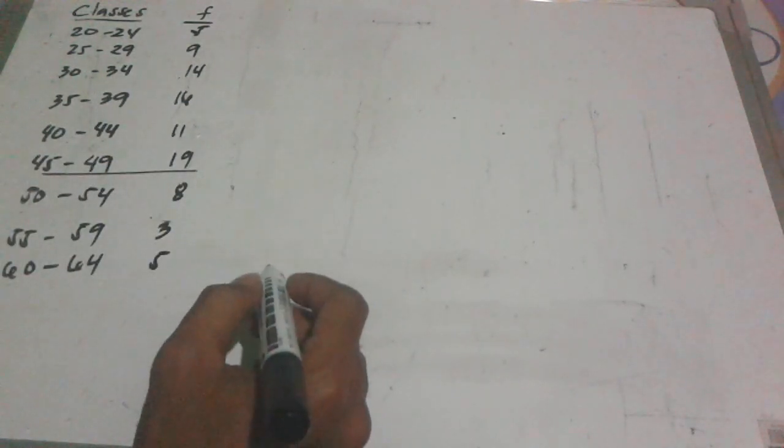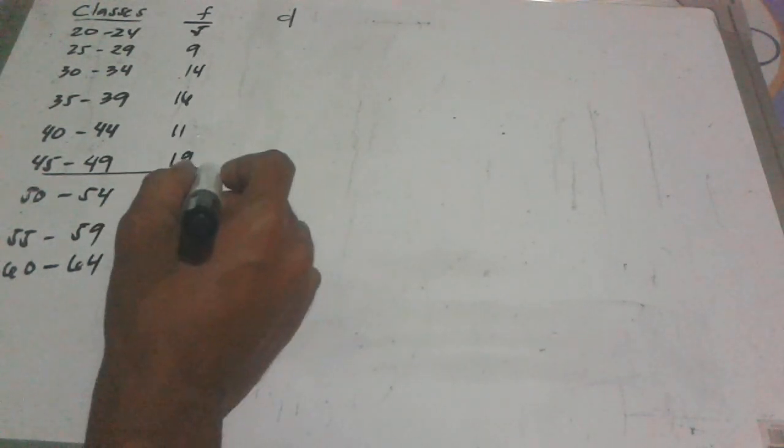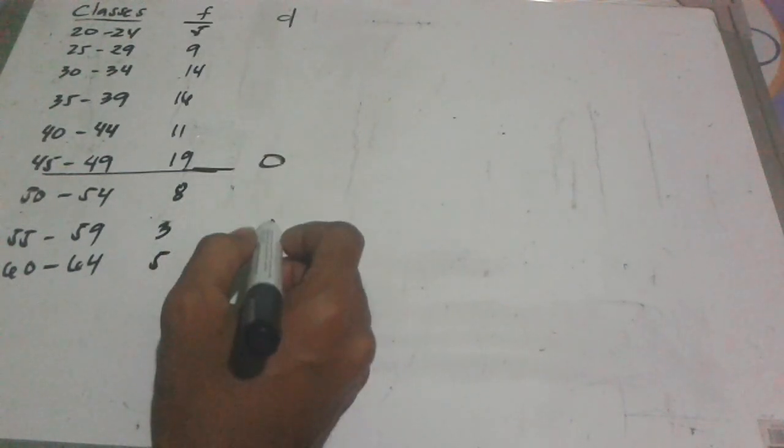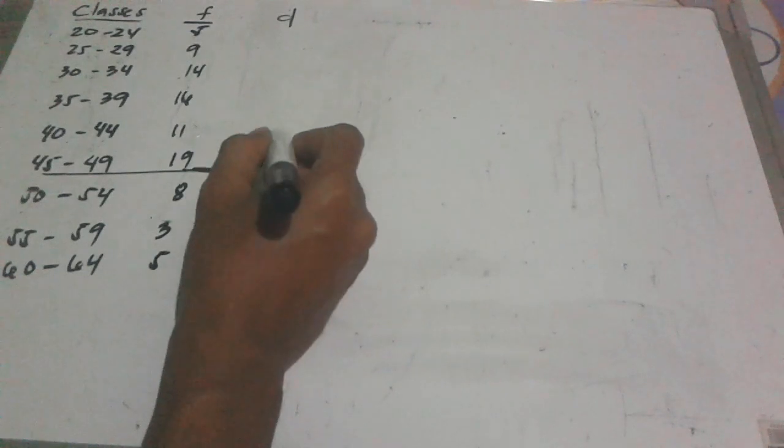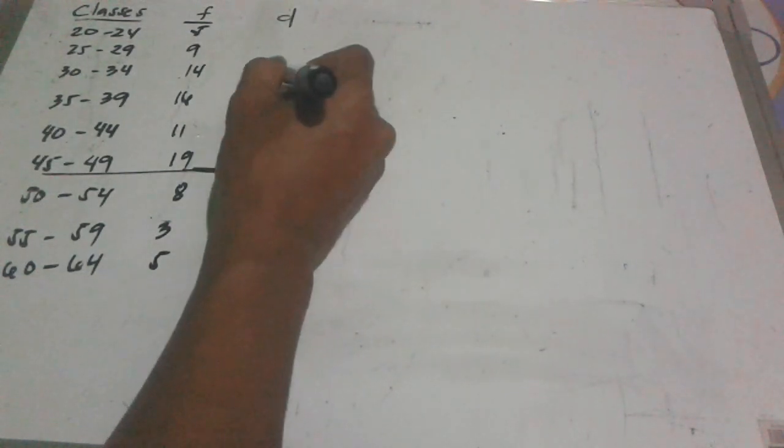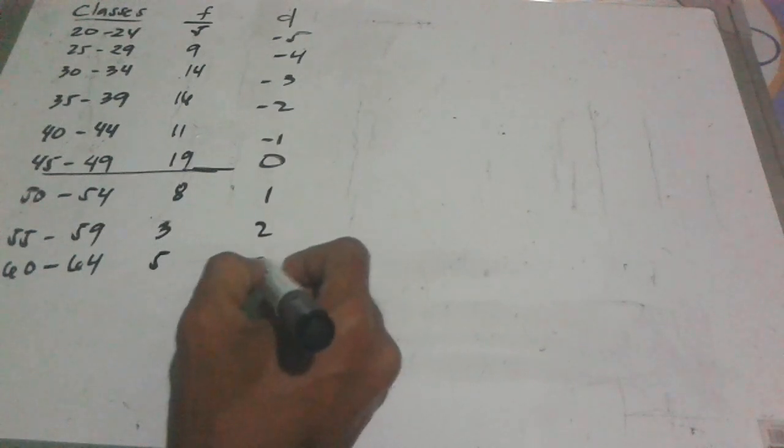So we have here an example: find the mean for grouped data using the unit deviation method. We're gonna start at the class with the highest frequency — that becomes D equals 0. Going upward we have negative 1, negative 2, negative 3, negative 4, and negative 5. Going downward we have positive 1, positive 2, and positive 3.